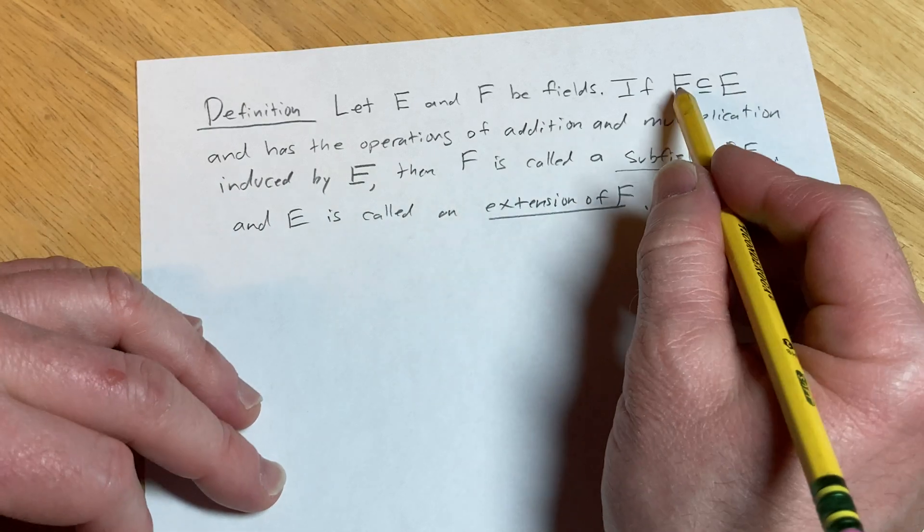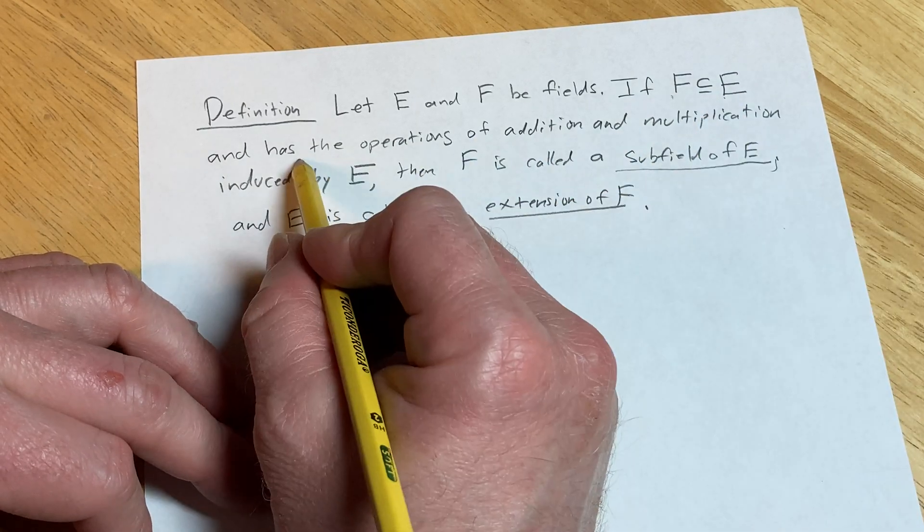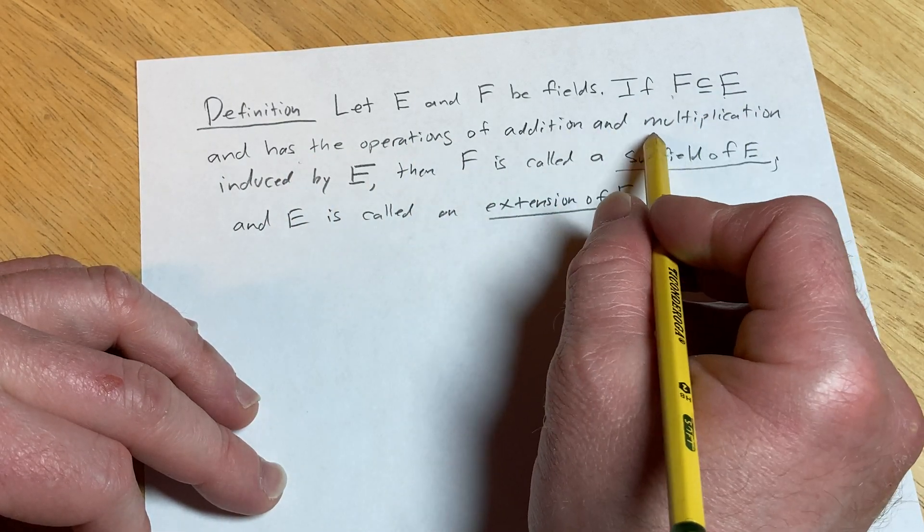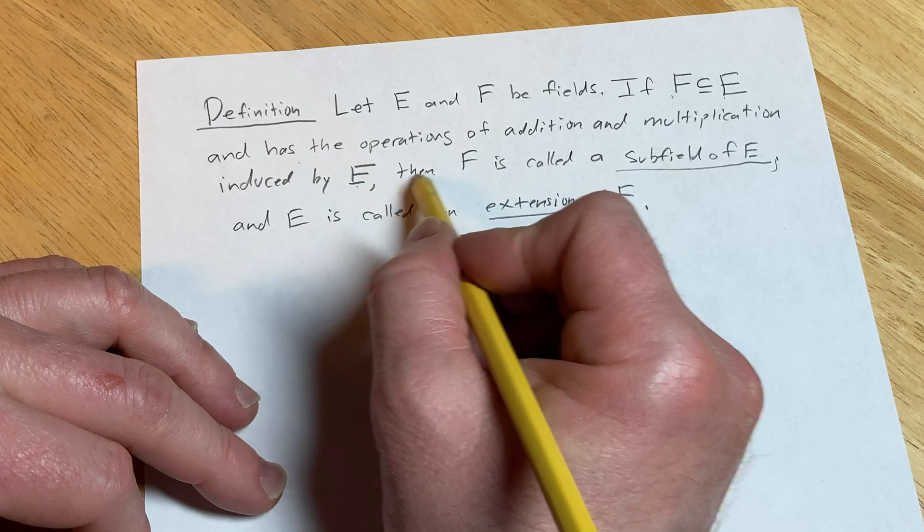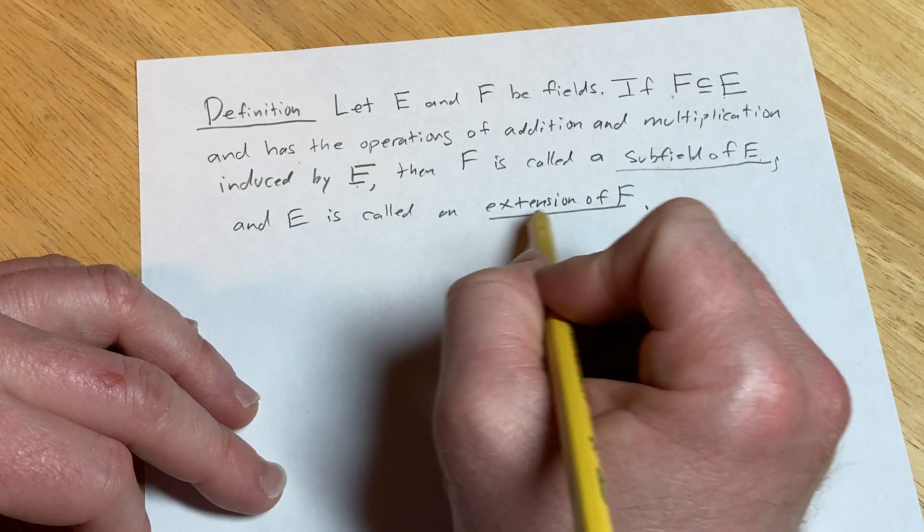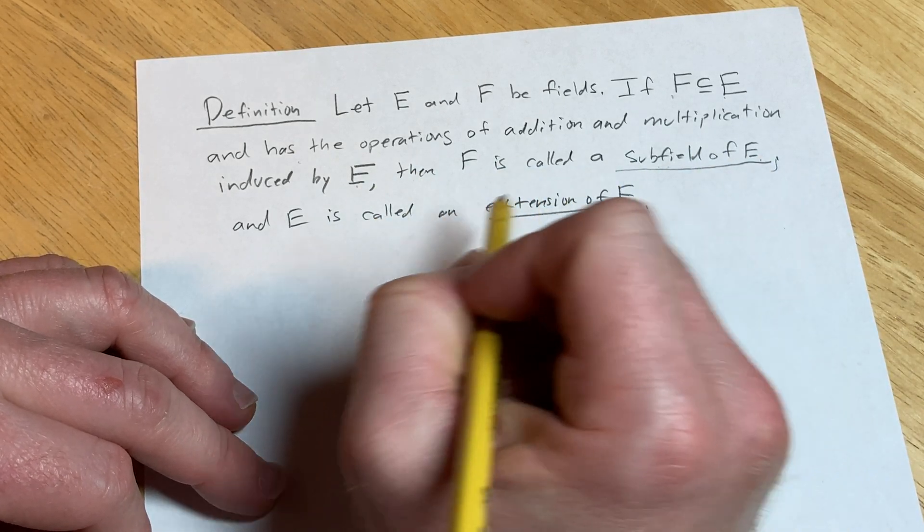Okay, so basically if F is contained in E and it has the operations of addition and multiplication induced by E, then F is called a subfield of E and E is called an extension of F.